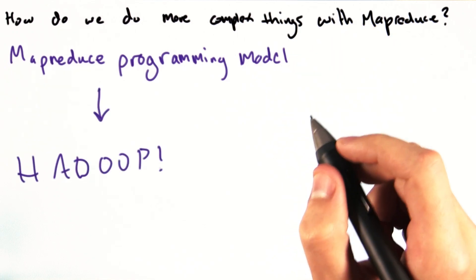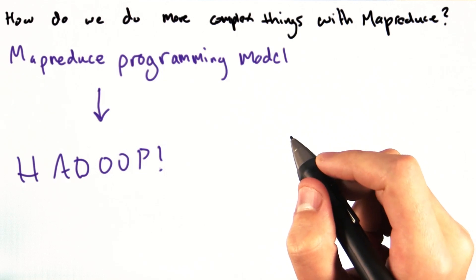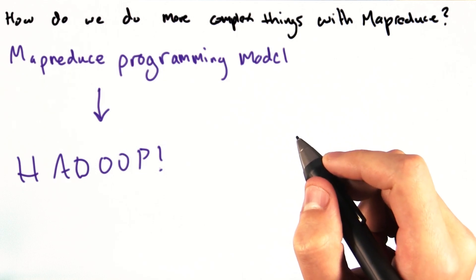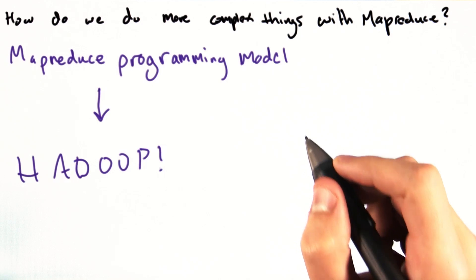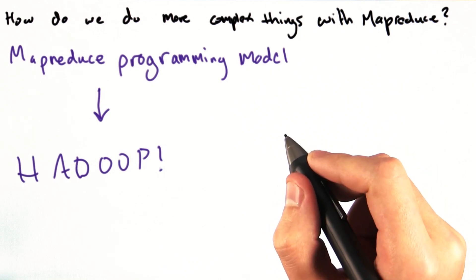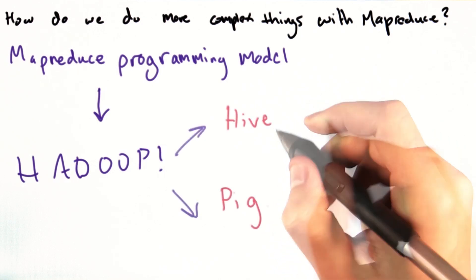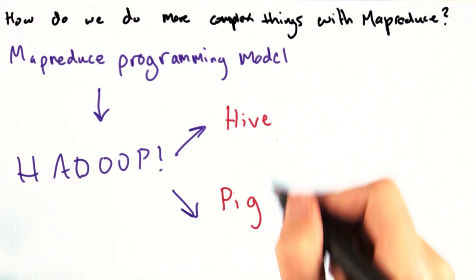In order to more easily allow programmers to complete complicated tasks using the processing power of Hadoop, there are many infrastructures out there that are either built on top of Hadoop or allow data access via Hadoop. Two of the most common are Hive and Pig.